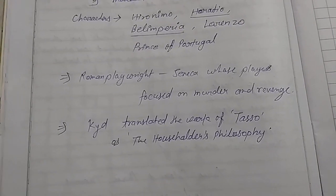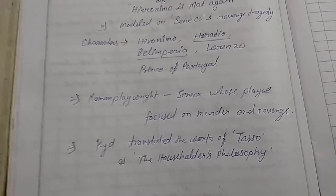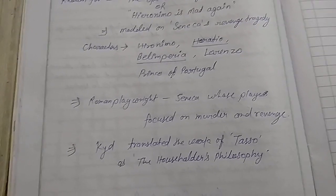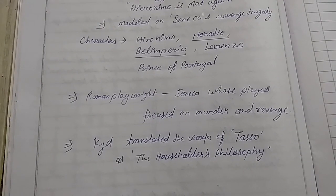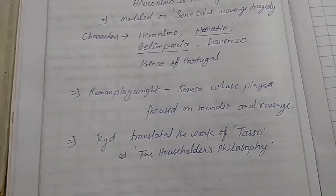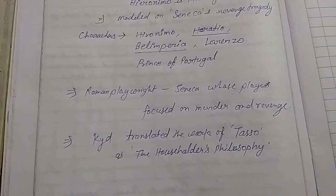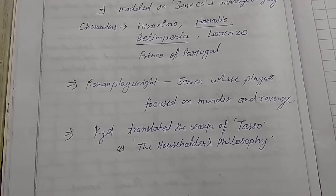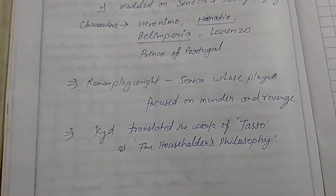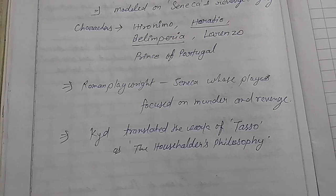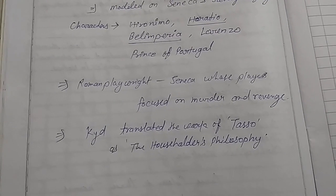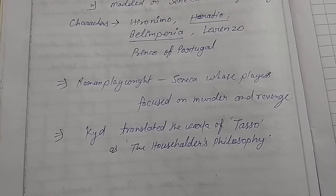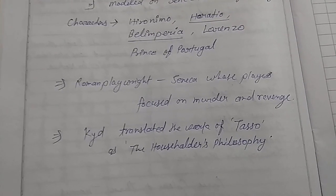Now let's talk about other works of Thomas Kyd. The Spanish Tragedy is his well-known work during the Elizabethan age, but Thomas Kyd also translated a work of Tasso, the Roman playwright. The work was 'The Householder's Philosophy.' This was the work of Tasso translated by Kyd.